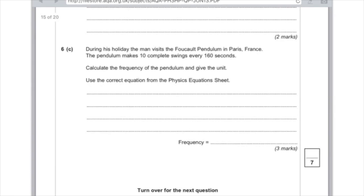And I'm just going to finish off with a pendulum question. So 6c, during his holiday, the man visits the Foucault pendulum in Paris, France. The pendulum makes 10 complete swings every 160 seconds. Calculate the frequency of the pendulum and give the unit and use the correct equation. So remember the correct equation from that sheet is time equals 1 over frequency. However, we need to work out the time taken to complete one complete swing. So if it took 160 seconds to complete 10 swings, then one swing took 16 seconds. So there's our time. So 16 equals 1 over F. Rearrange that equation, so it's 1 divided by 16 equals F. And that will get you an answer of, use your calculator quickly, 0.0625. And you must include the unit here because it's asked you to, and that is hertz because it is frequency.